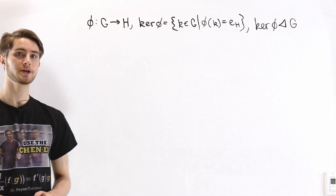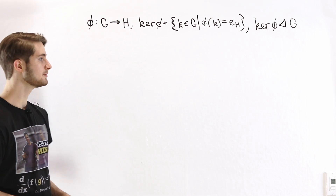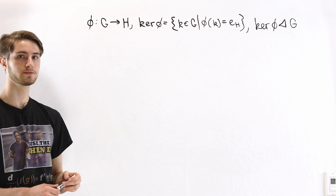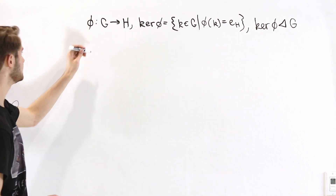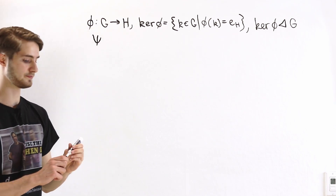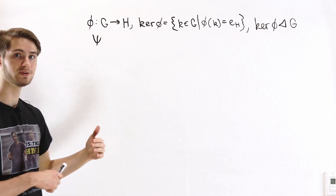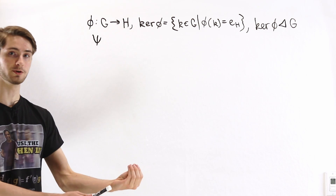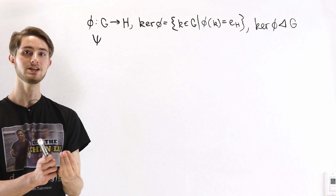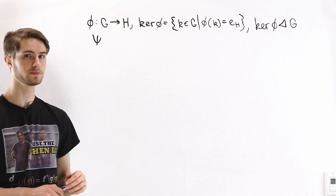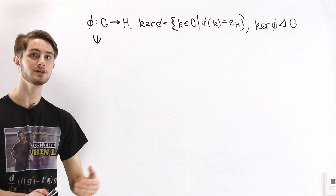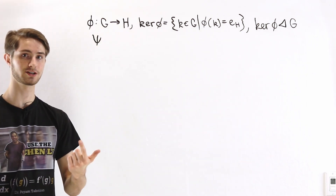Now let's return to the first isomorphism theorem. We start with a given homomorphism from G to H. Our goal is to take phi and construct another map psi which is an isomorphism. The difference between an isomorphism and a homomorphism is that an isomorphism must be bijective — injective and surjective. Let's see how we can turn this homomorphism into something that is both injective and surjective.